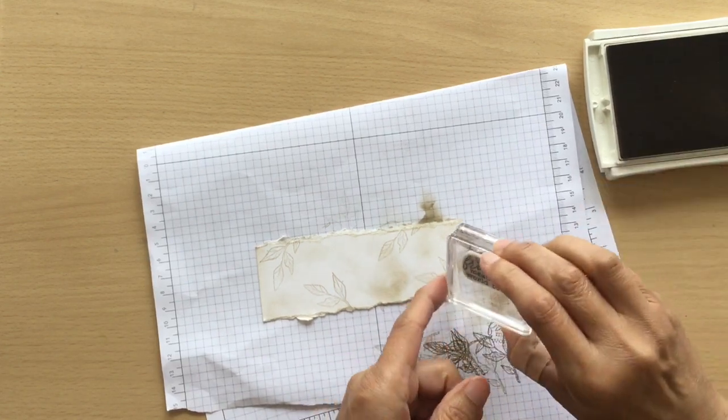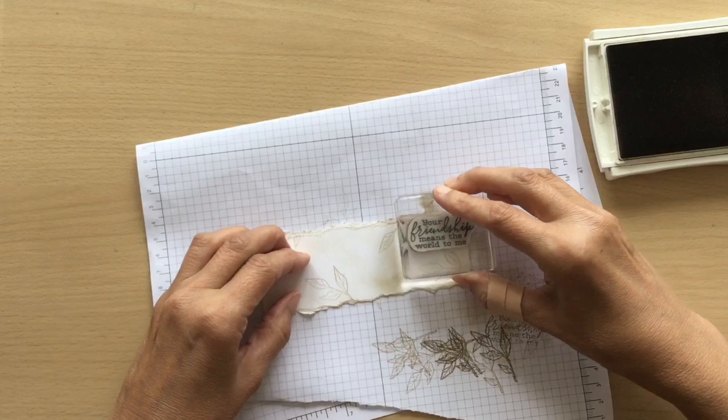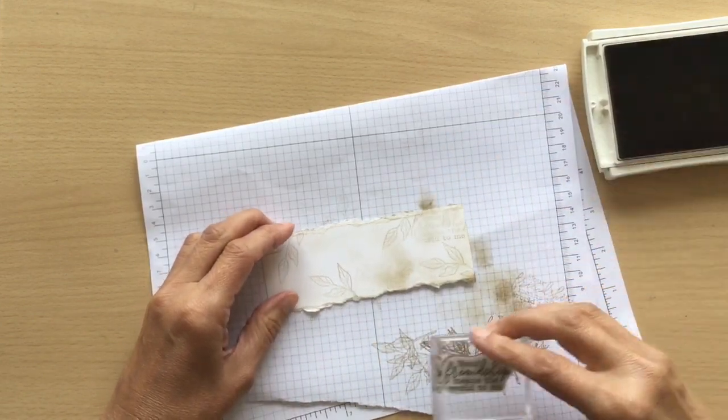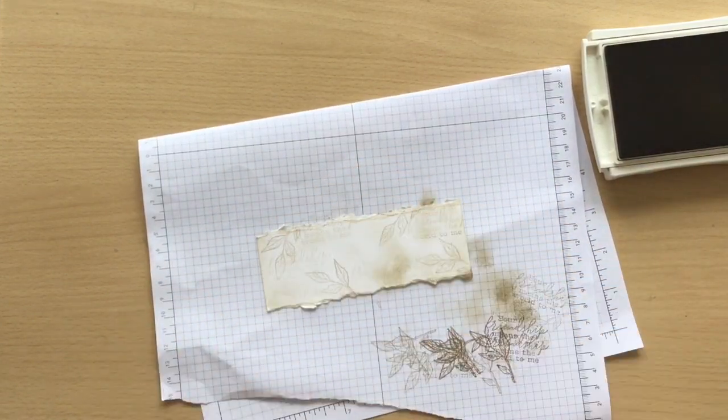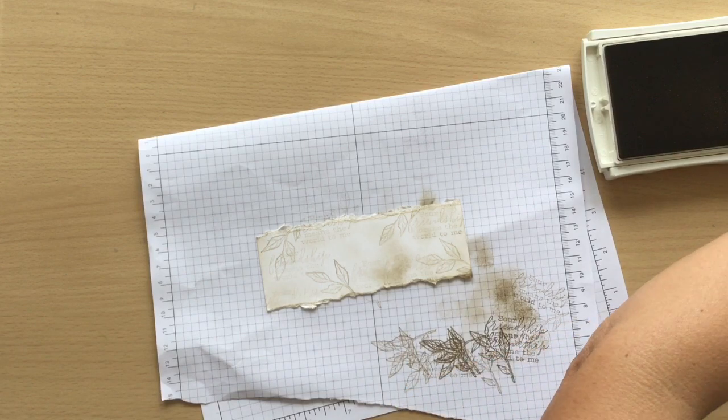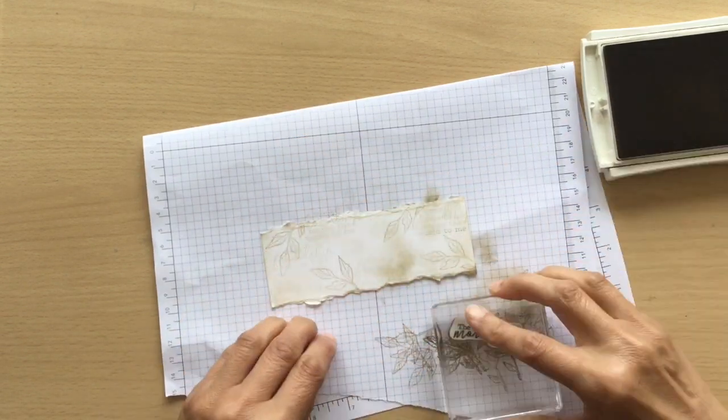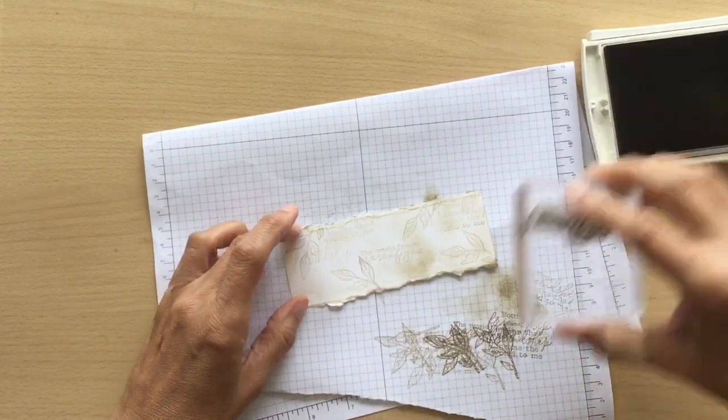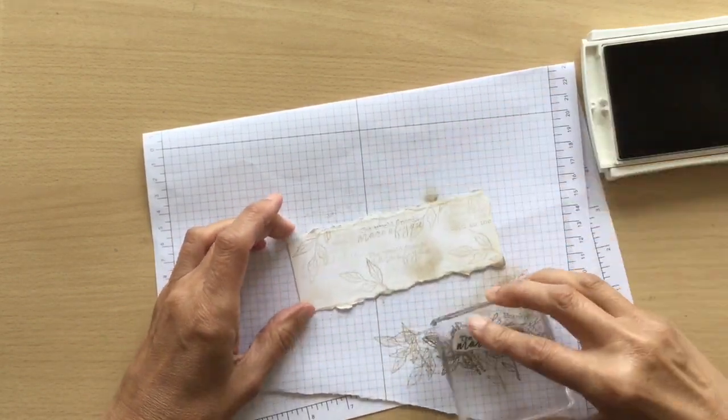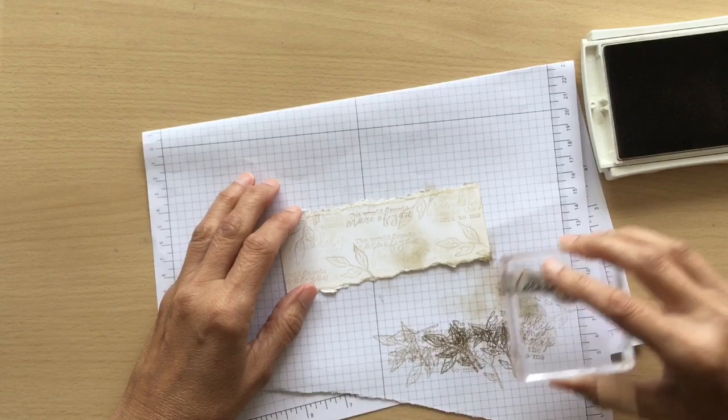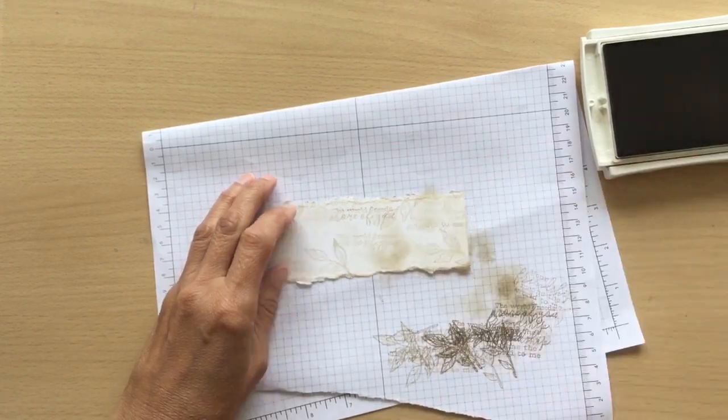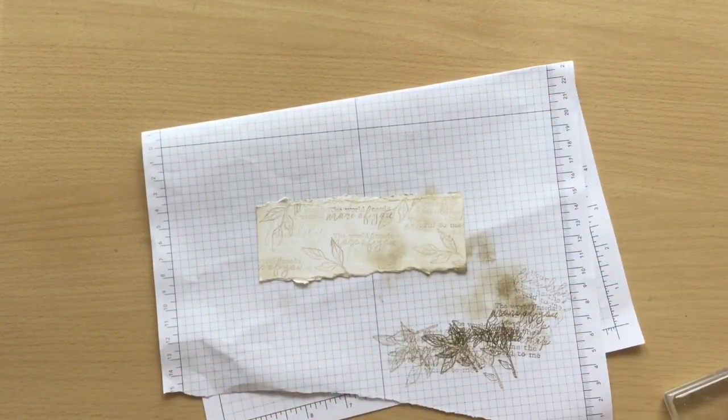So now I've just chosen one of the sentiments and I'm stamping over the back. Coming in one of the others and again stamping off, stamping over the back. It is just for background, you're not really meant to be able to read it.